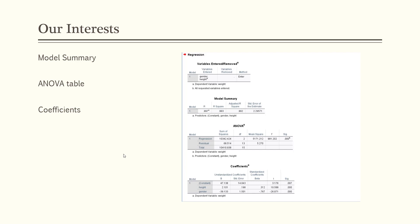We're going to read these outputs very similarly to what we did before, but it's bumped up in complexity because we have two independent variables instead of just one explaining the variance in our dependent variable — weight. This is the actual table I got from the height, weight, and gender data I ran for this presentation. You can see the model summary, the ANOVA, and the coefficients. This is what comes out.